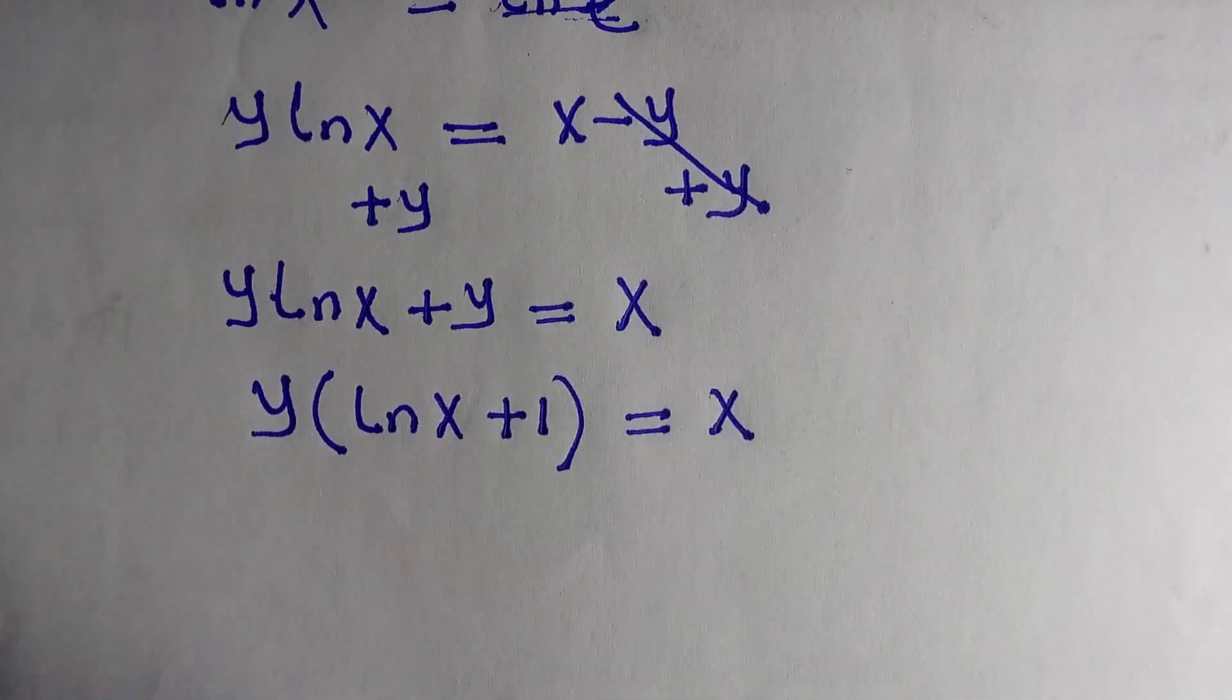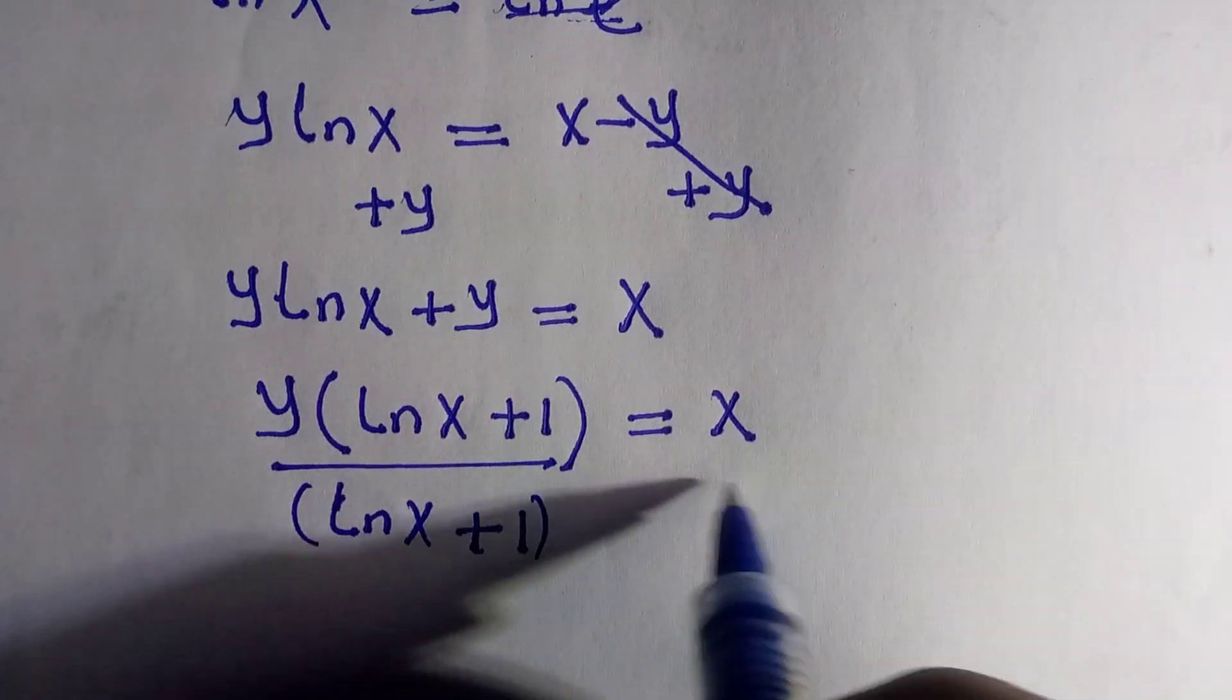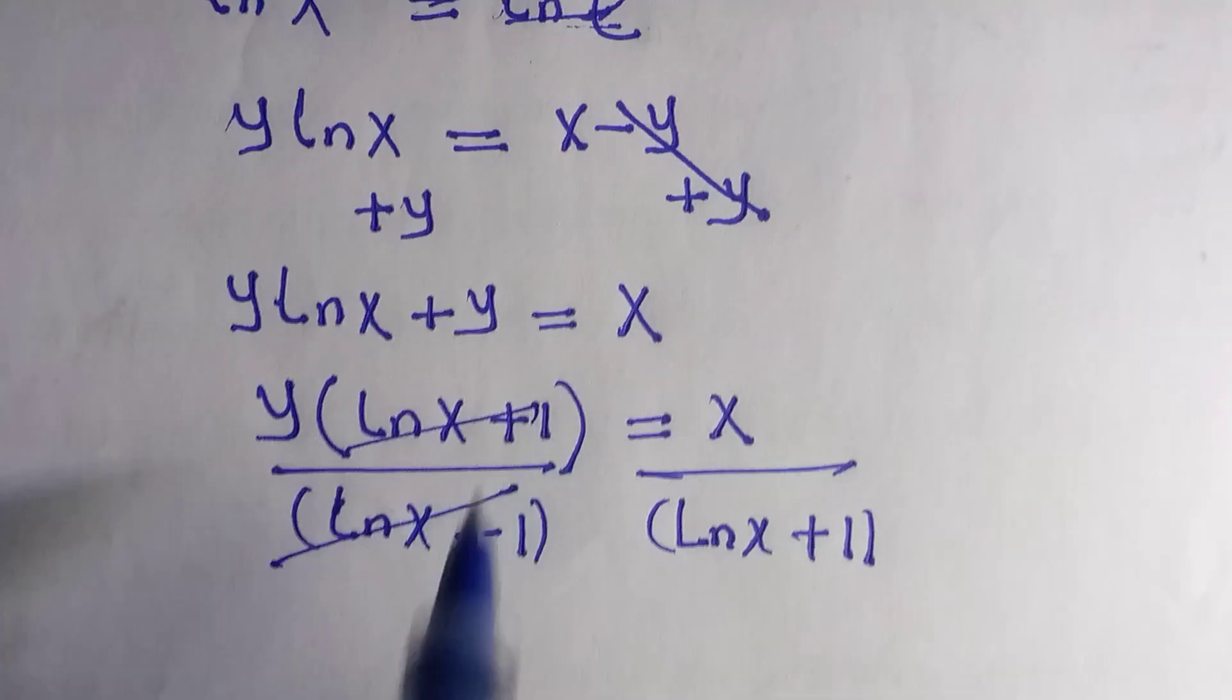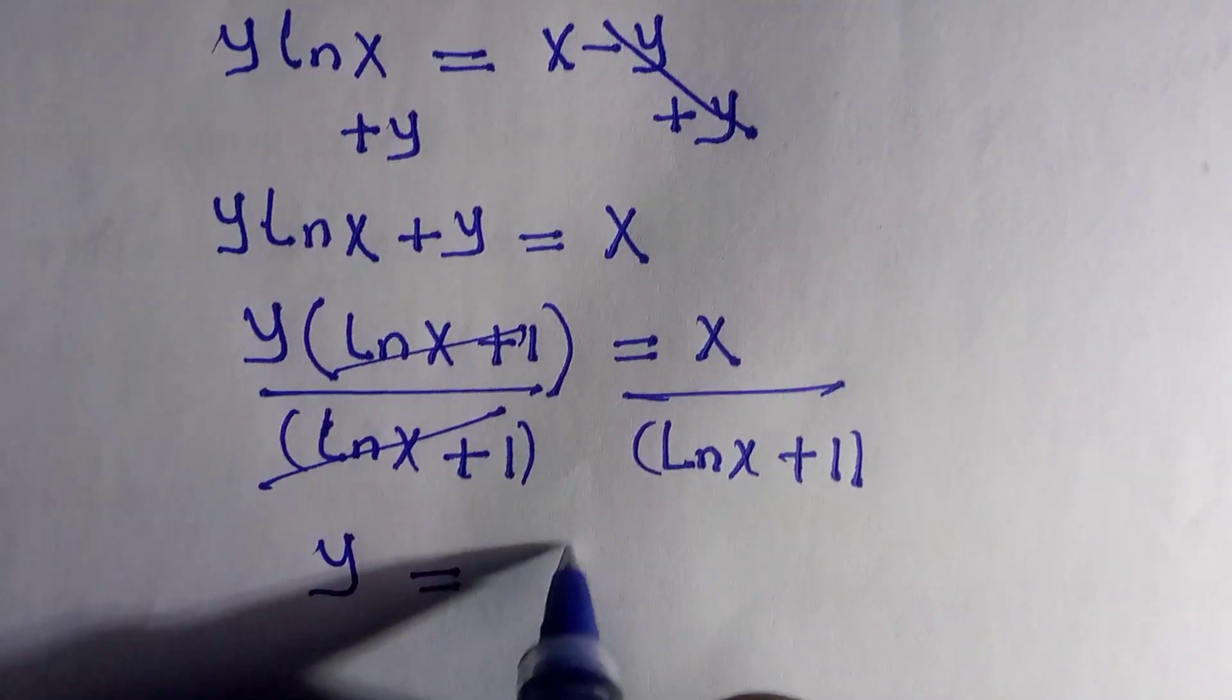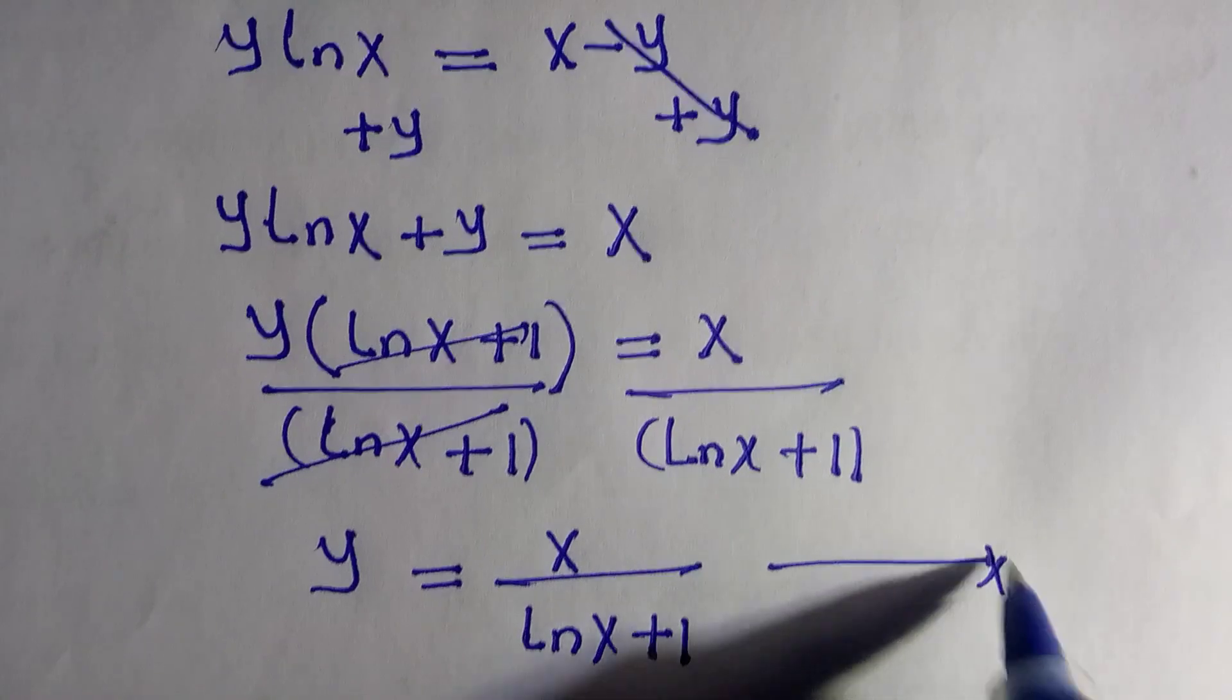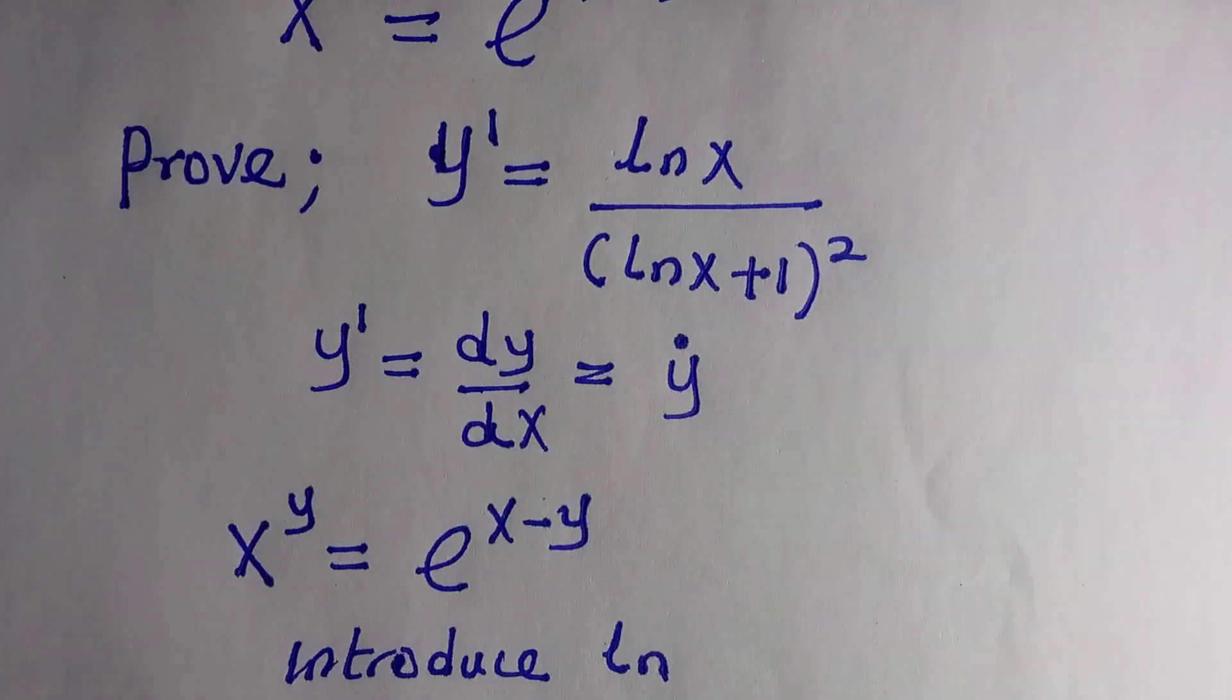We have y comma here, and by taking y out we have ln x plus 1, written equals to x. And by making y the subject we have y equals to x divided by ln x plus 1.